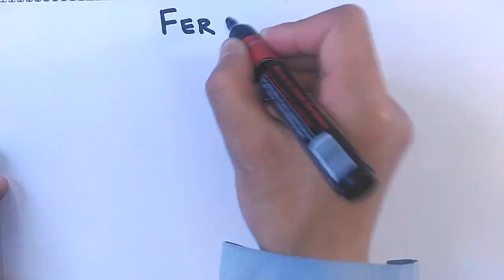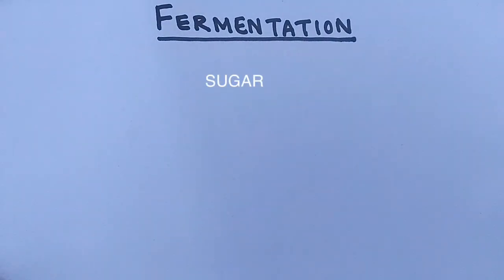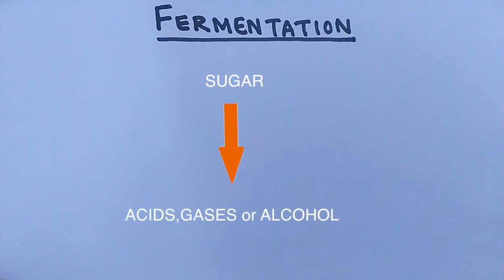Hello friends, in this video we'll be discussing fermentation. It's a metabolic process that converts sugar molecules to acid, gases, or alcohol. We mostly see this in yeast and bacteria, but it also occurs in oxygen-starved muscle cells, as in lactic acid fermentation, which causes fatigue. The ultimate goal is to gain ATP from food, and we get this from sugars like glucose.